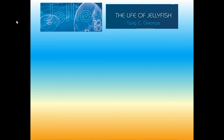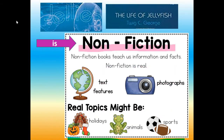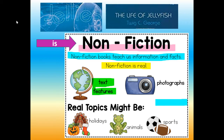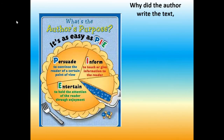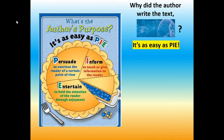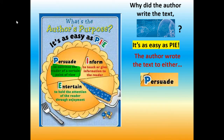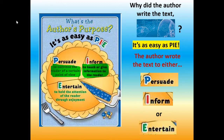Jellies: The Life of a Jellyfish is nonfiction. Nonfiction books teach us information and facts. Nonfiction is real — it has text features like photographs. Real topics might be holidays, animals, and sports. Why did the author write the text Jellies? It's as easy as P-I-E or pie. The author wrote the text to either persuade — P is for persuade, to convince the reader of a certain point of view; to inform — I means to teach or give information to the reader; or to entertain — E stands for entertain, to hold the attention of the reader through enjoyment.